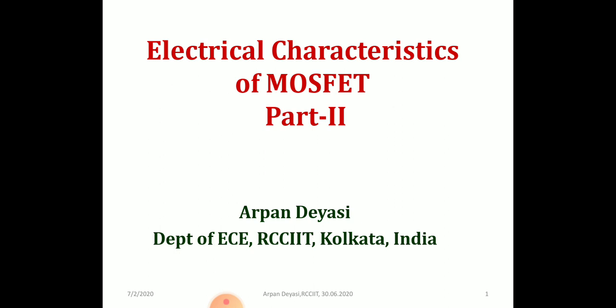Recapitulating the journey started about one month back: I began the course on the MOS capacitor. In the first lecture, I discussed the band diagram of the MOS structure — specifically aluminium, silicon dioxide, and silicon — to build familiarity with the conventional MOSFET structure. I applied various boundary conditions and different biases, showed the band diagram, and solved Poisson's equation to obtain the QV as well as CV characteristics.